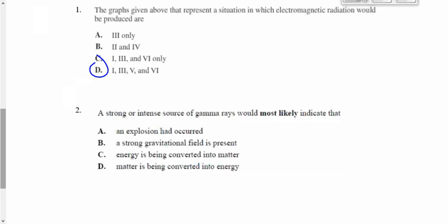Two. A strong or intense source of gamma rays would most likely indicate what? An explosion has occurred? Maybe. A strong gravitational field is present? No, that doesn't have anything to do with gravity, right? Energy is being converted into matter? That sounds pretty good, doesn't it? What's wrong with that? It's the opposite, right? It's matter being converted into energy, not energy being converted into matter. So the answer for that one is D.